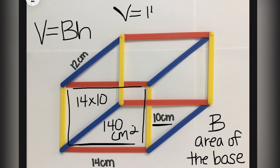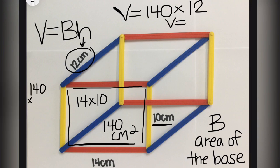So volume equals 140 times we need H. In this case, H is 12 centimeters. That is the height of the shape. Multiply 140 times 12. Go ahead and work on the math here. And here we go.